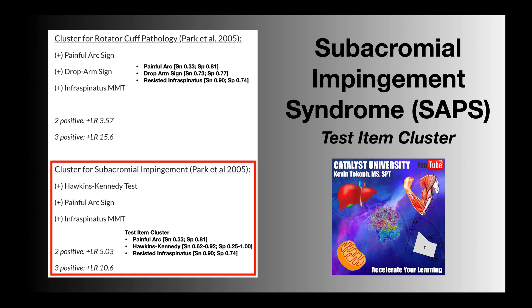As stand-alone tests, each of these has individual psychometric properties, like sensitivity and specificity, that you can see on screen. We'll cover those later in the video. However, the advantage of doing all three of these tests is you get to pool the results, and depending on how many of the three are positive, it gives you a specific positive likelihood ratio. Remember, the higher the positive likelihood ratio, the more likely it is that the person has that condition specific to the cluster.